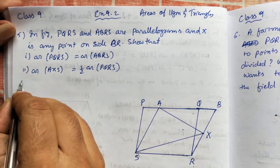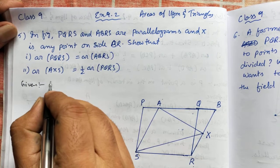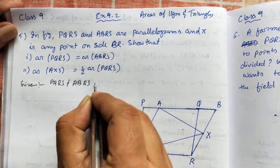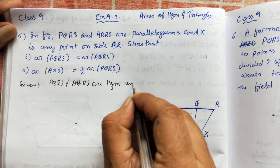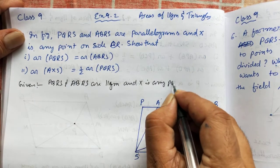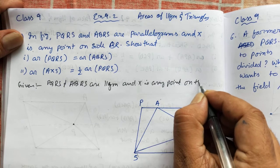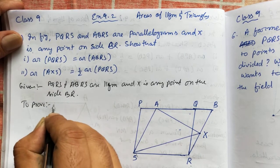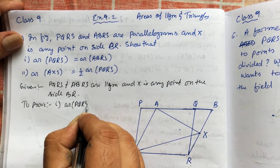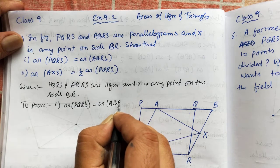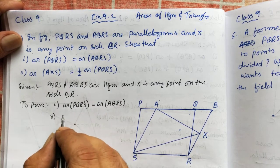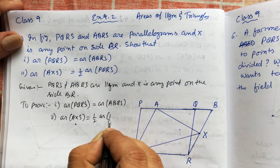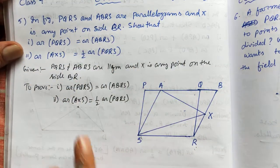This first proof is done directly. You can write given into proof. Given: PQRS and ABRS are parallelograms, and X is any point on side BR. What you're going to prove: Number 1, area of BQRS is equal to area of ABRS. And second, area of AXS is equal to half the area of BQRS.